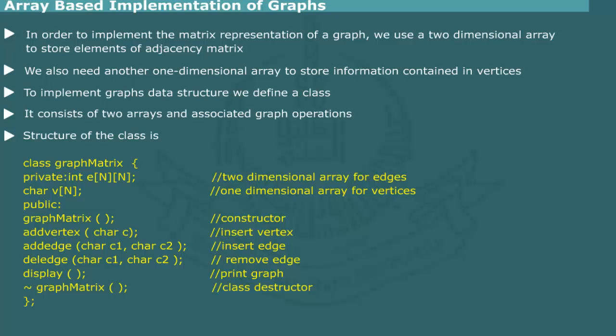We call this class GraphMetric. The structure of the class is shown in figure. It consists of following arrays: two-dimensional array E to store edges, one-dimensional character array V to store vertices. The basic operations are implemented using the following methods: add vertex to insert a new vertex, add edge to insert a new edge, del edge to delete an existing edge, display to print the graph.